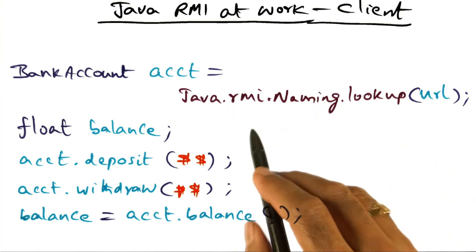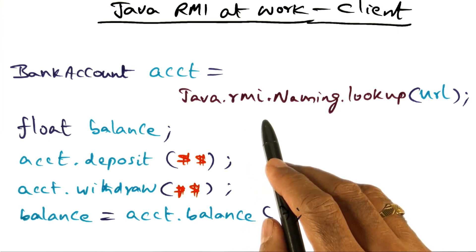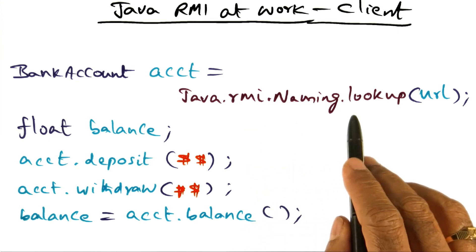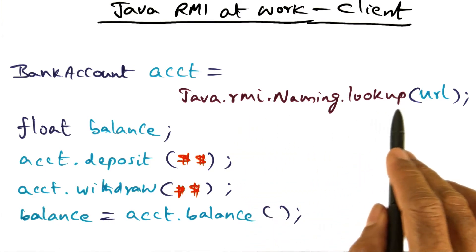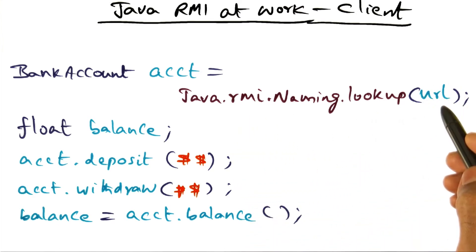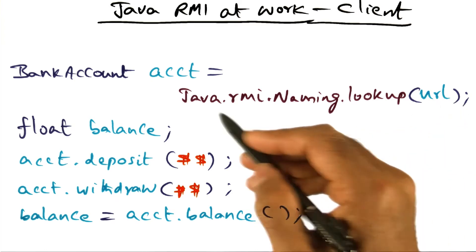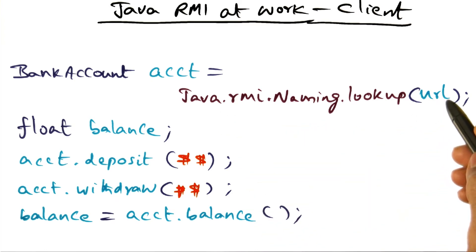What a client would do is look up the service provider by contacting a bootstrap name server in the Java RMI system. It does a lookup of the URL. This URL is published, and once it is published, the client can look it up.